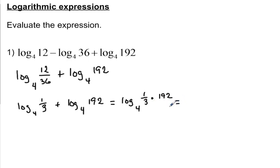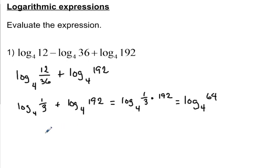Next, we're going to multiply 1 third times 192. 1 third times 192 is equivalent to 192 divided by 3, and 192 divided by 3 is 64. So what we actually have to find is the log of 64 base 4. Rewriting in exponential form: 4 raised to some power x equals 64. If you take 4 and multiply it by itself 3 times, you get 64. Therefore, our answer is 3.